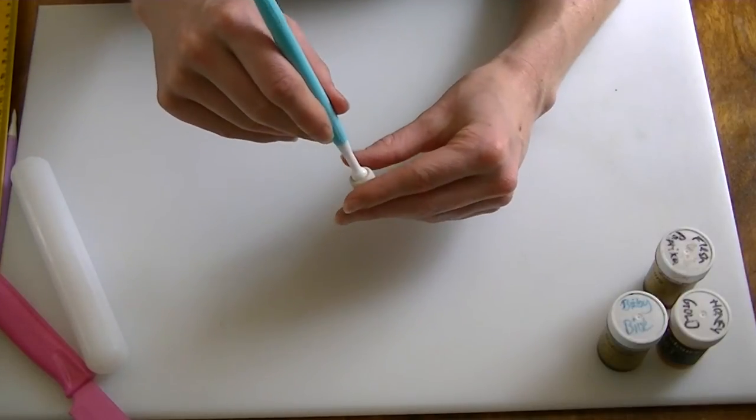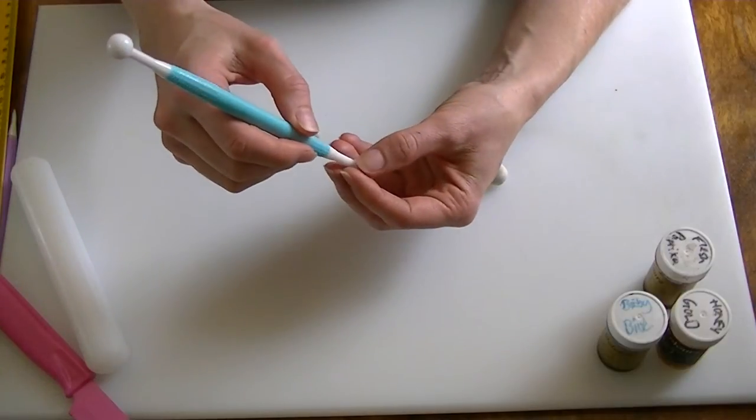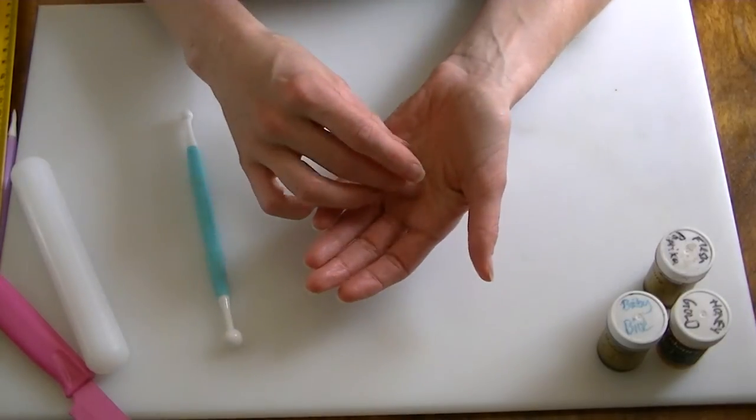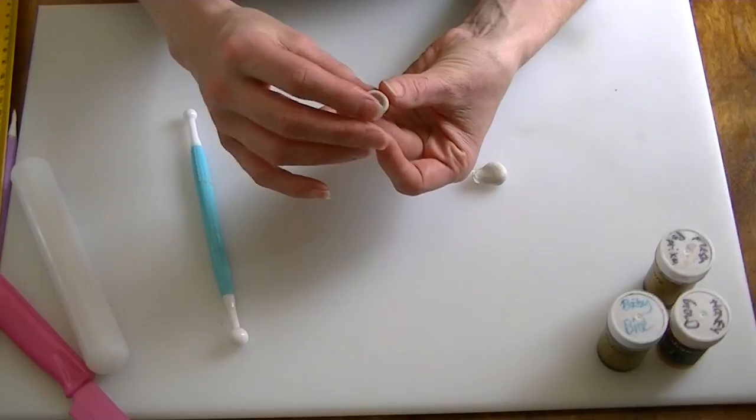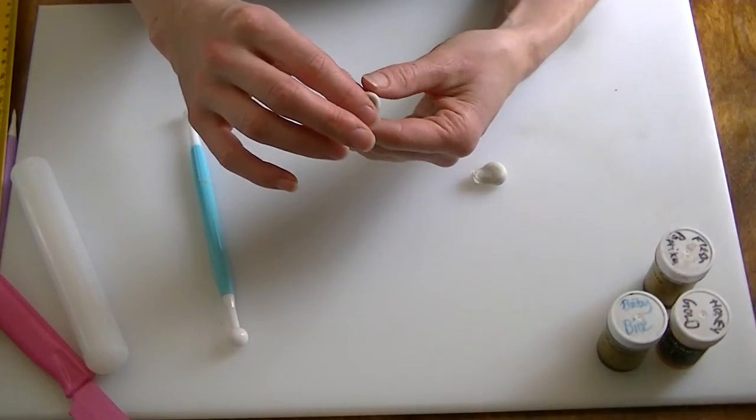Smooth it round, and I'm going to pull it off, so I've got a slight cup shape like that.